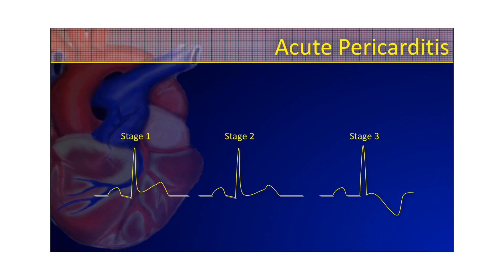In this video, we're going to talk about acute pericarditis. Acute pericarditis is inflammation of the pericardial sac, which is the sac around the heart. As it becomes inflamed, it can cause ECG changes. In the first stage, it can cause concave ST elevation. It will even cause some PR segment depression, and in the final stage, you might have some T-wave inversion.